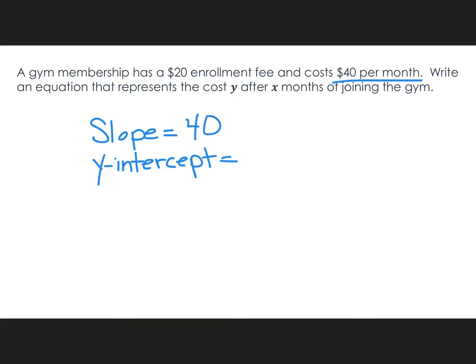And then we had an enrollment fee — a one-time fee. That's 20. So now all I have to do is say y equals my slope times x plus my y-intercept. Not too hard.